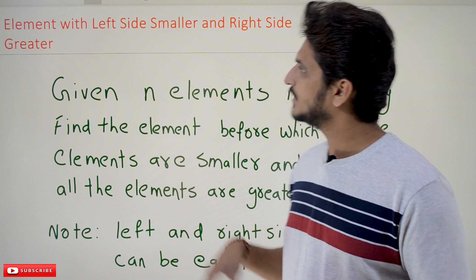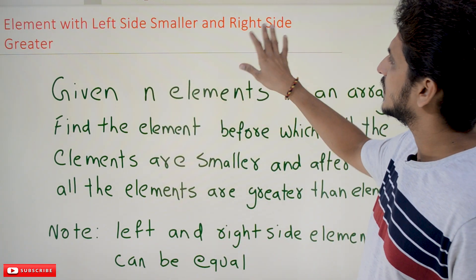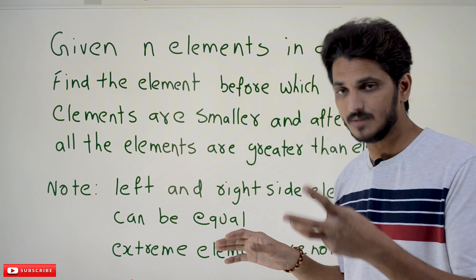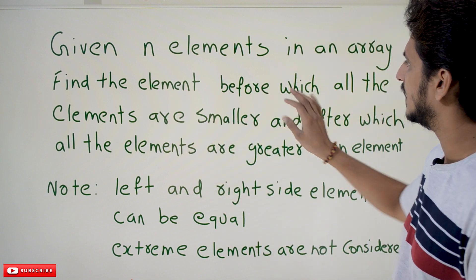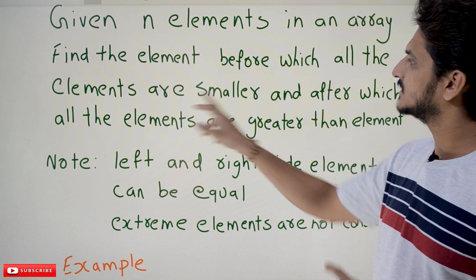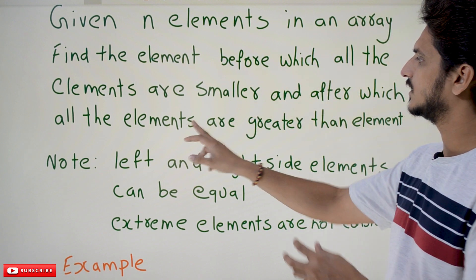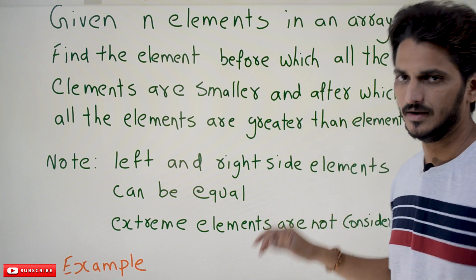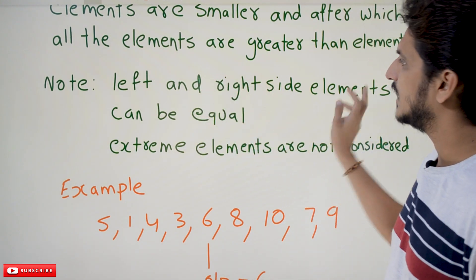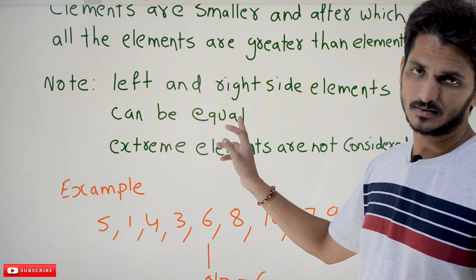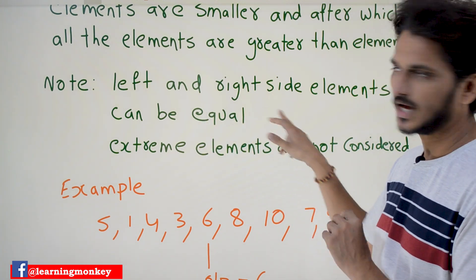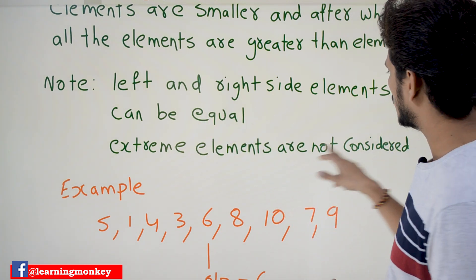Coming to today's example: element with left side smaller and right side greater. Given n elements in an array, find the element. We need to identify an element before which all the elements are smaller and after which all the elements are greater than the element. Note: left and right side elements can be equal to the element. Extreme elements are not considered.